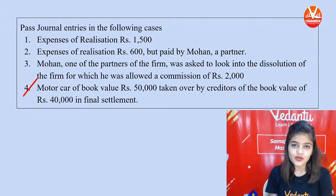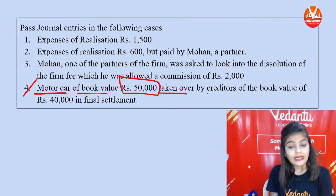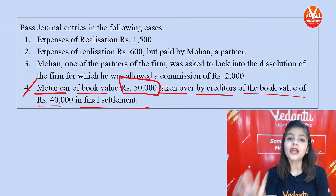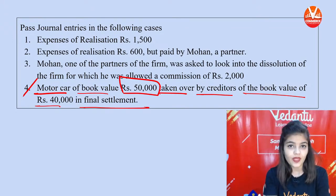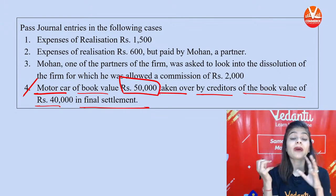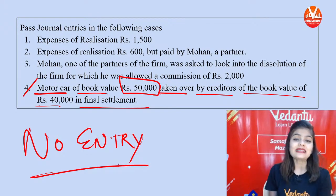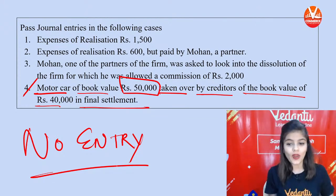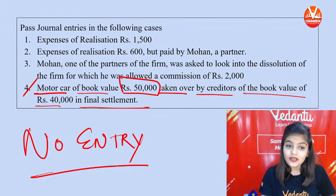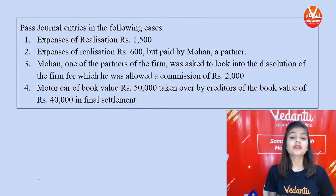Fourth transaction — motor car of book value ₹50,000 is taken over by a creditor at ₹40,000 in full settlement. When an asset is taken over by the creditor, no entry is to be recorded. There will be no journal entry for transaction number 4.